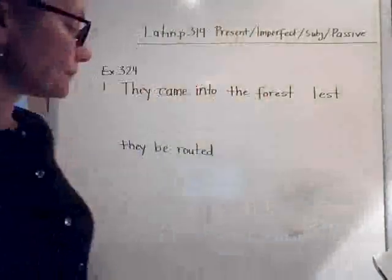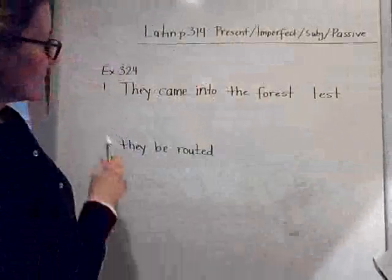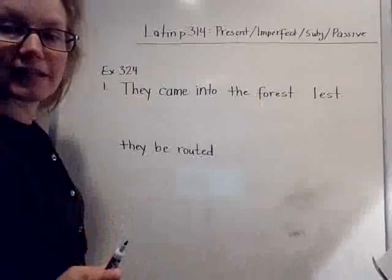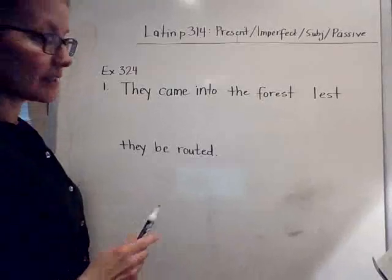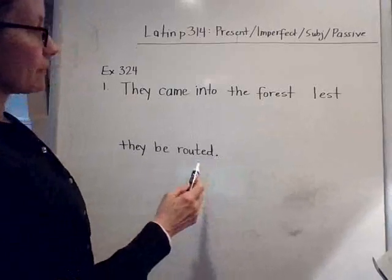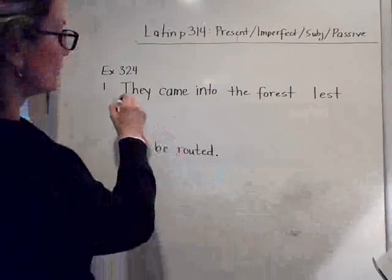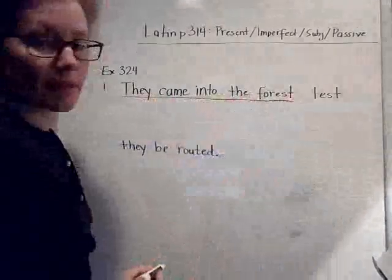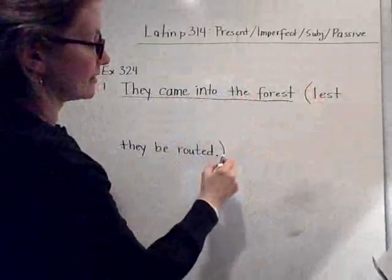We'll work through a couple of sentences. This is from exercise 324, number 1. The first thing we want to look at is what is the main clause. It's 'they came into the forest,' and then the purpose clause is 'lest they be routed.'